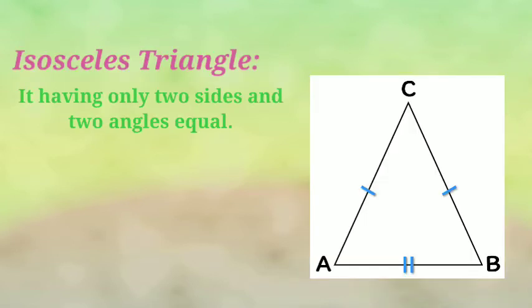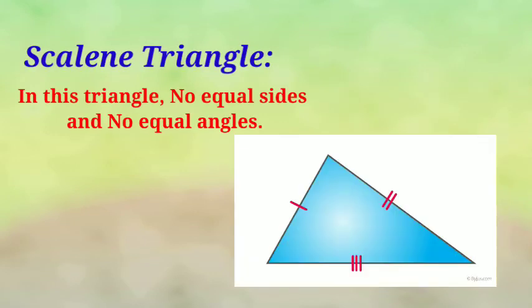Next one is Isosceles Triangle. Here two sides are equal and opposite to those sides means angles also equal to each other. And third is Scalene Triangle. Here no sides equal and no angles equal.